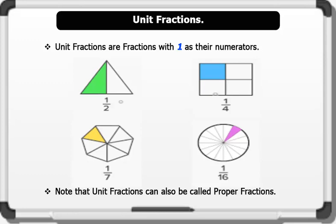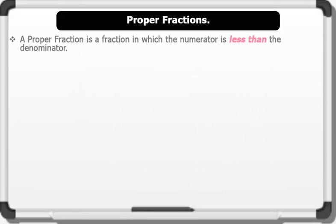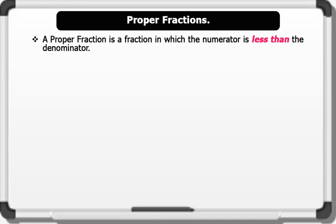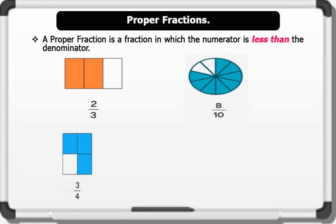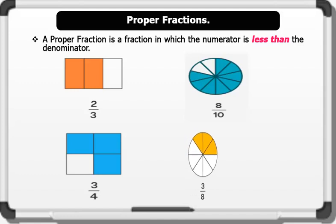Now let's see what a proper fraction is. A proper fraction is a fraction in which the numerator is less than the denominator. Examples of proper fractions include: 2 over 3, 8 over 10, 3 over 4, and 3 over 8.